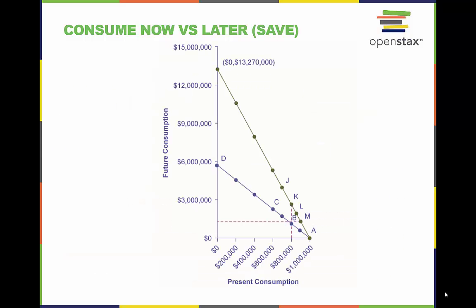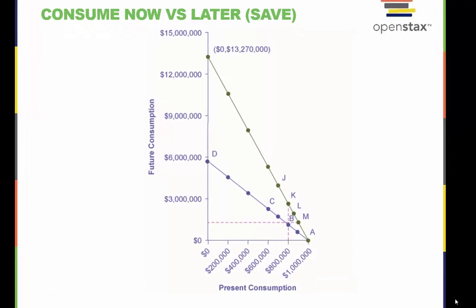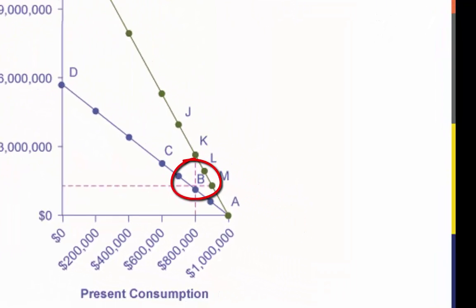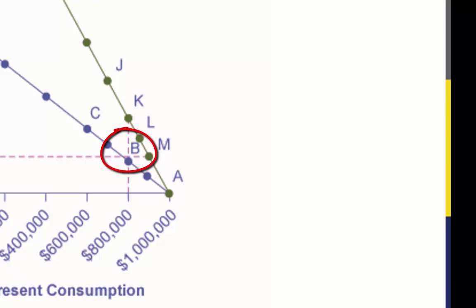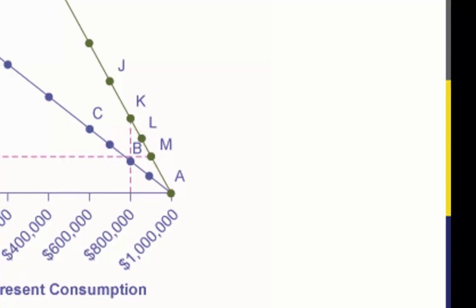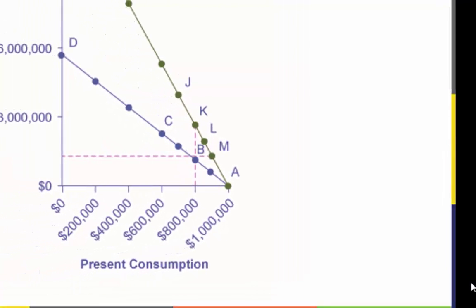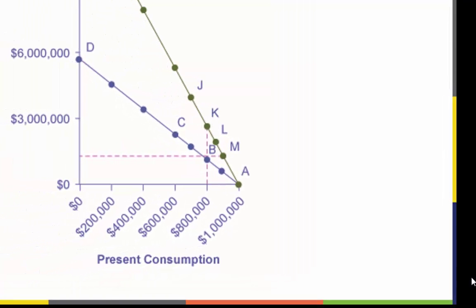The savings versus consumption decision can be analyzed using an intertemporal budget constraint, like the one pictured here. John will make a choice between present and future consumption. With an annual rate of return of 6 percent, he decides that his utility will be highest at point B, which represents a choice of $800,000 in present consumption and $1,148,000 in future consumption.